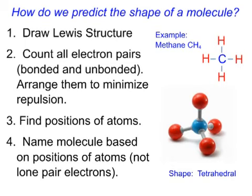And when they are arranged to minimize the repulsion, the shape is tetrahedral right here. That's the shape that we can have each of these pairs of electrons as far apart from one another as possible. Then we find the positions of the atoms, which we have right here. And we name the molecule based on the positions of the atoms, not on lone pairs. And this doesn't really affect us in this case because we don't have any lone pair electrons. So our final shape is tetrahedral.